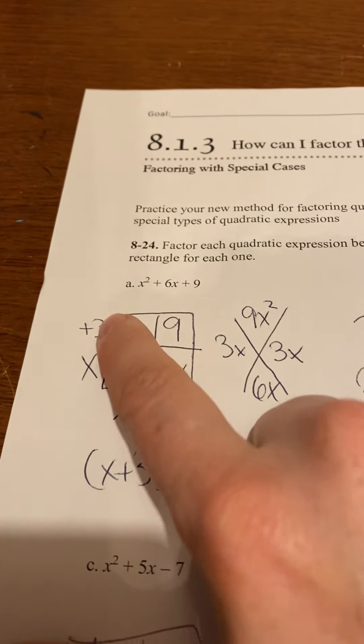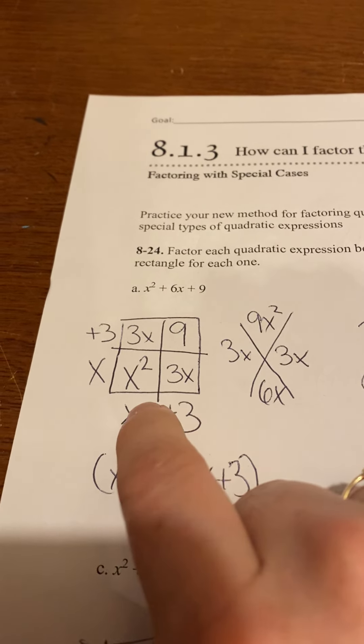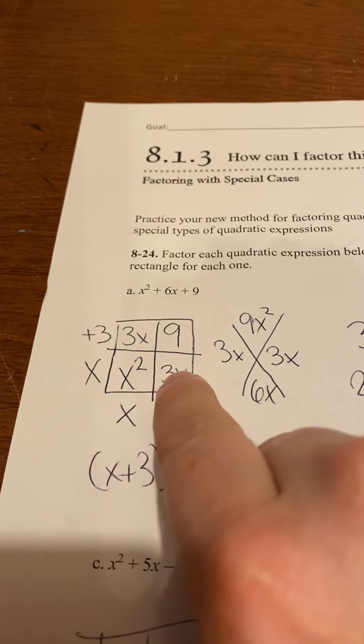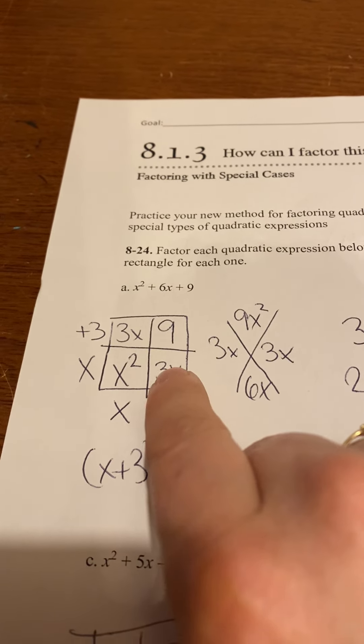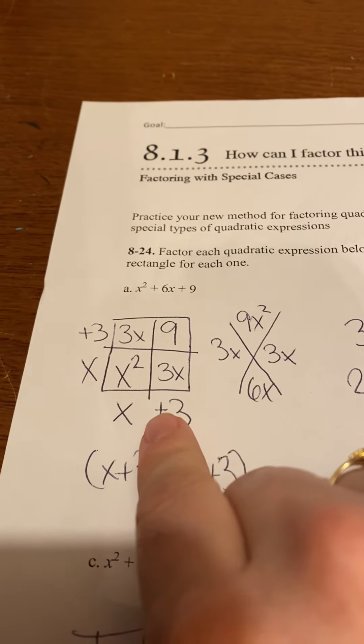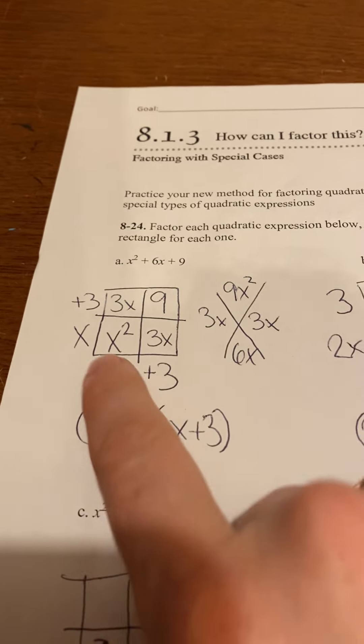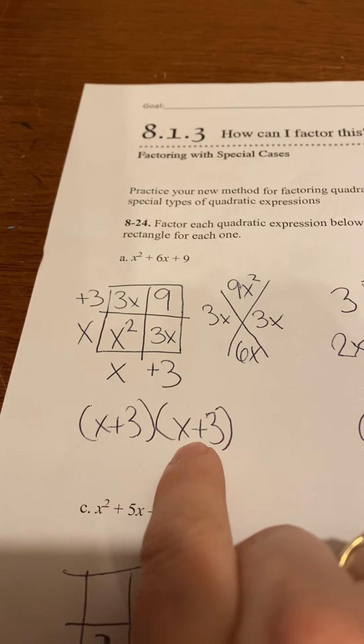So you know that those are going to be the two that go in the other diagonal. From there, x times x is x squared. So then x times what would give you 3x? Well, 3. Same thing up here. And then here you can check and make sure 3 times 3 is 9. So you have x plus 3 times x plus 3.